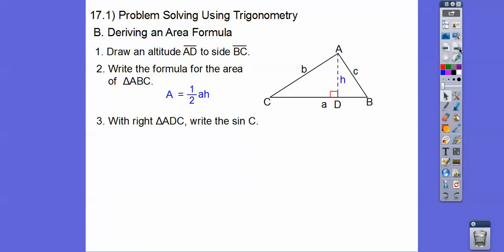Now let's integrate that with our sine ratio. So let's find the sine of C with this right triangle right here. So it's going to be opposite over hypotenuse, which is H over B right there. Okay. So now we're going to solve this equation for H. So I'm going to multiply both sides by B. Okay. Let's do that first right there.